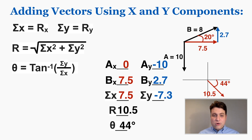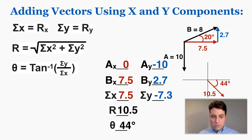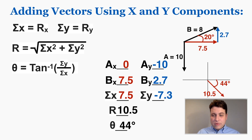That's how you solve problems like this. You'll get a lot of practice with it, and it becomes especially important when you have three, four, or five vectors — you just add more rows to the table and sum them all together. That's all you need to know about complex vector addition; the best way to get good at it is with a lot of practice.